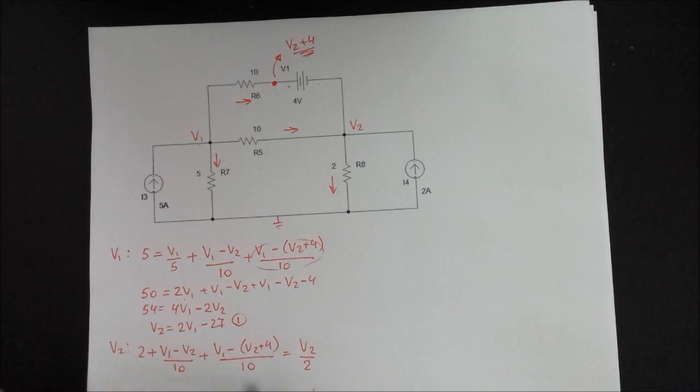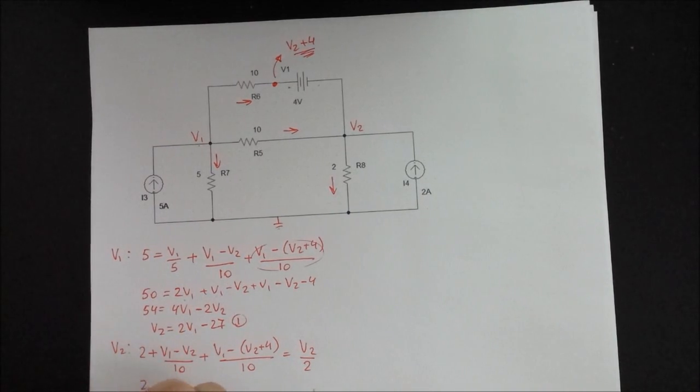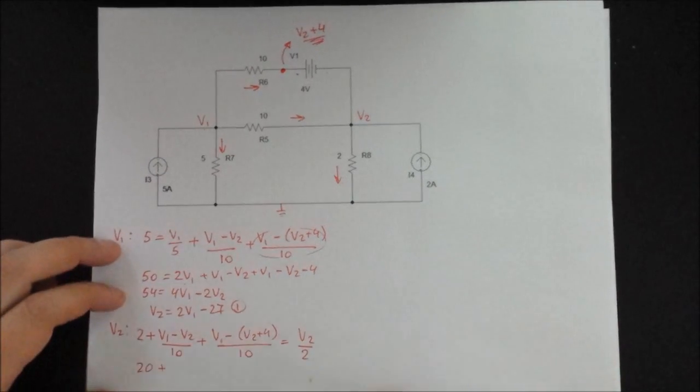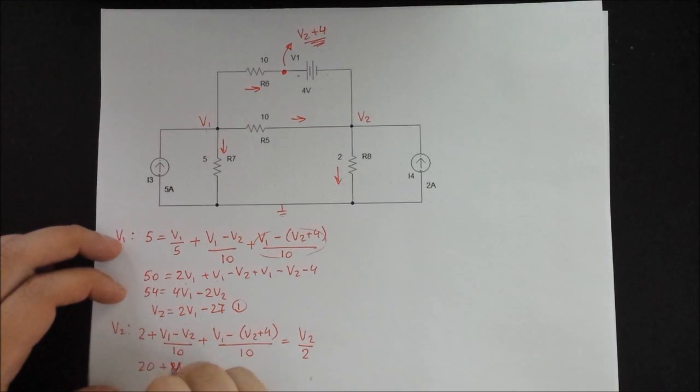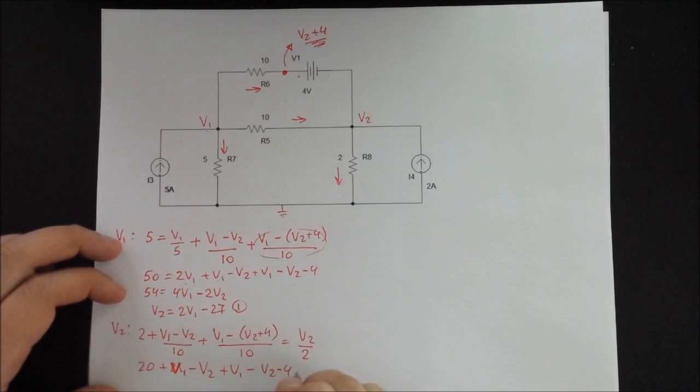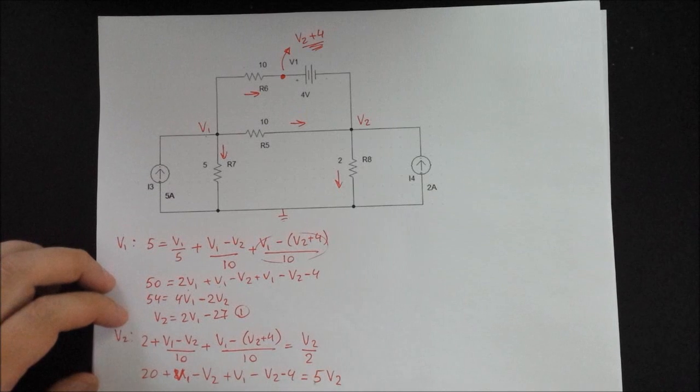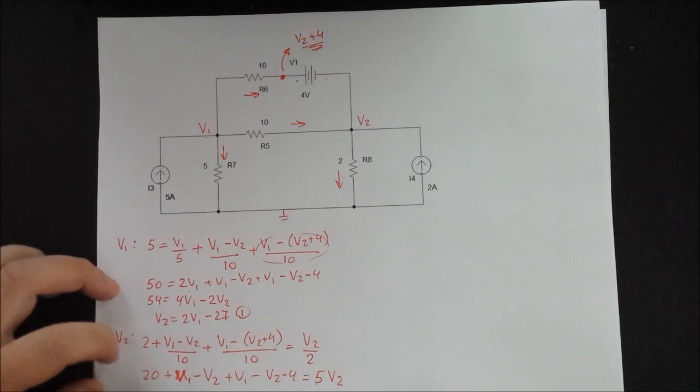So we can multiply by 10 once again. So that's 20 plus V1 minus V2 plus V1 minus V2 minus 4. And all that is equal to 5V2.